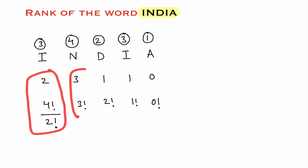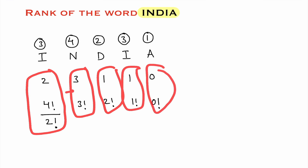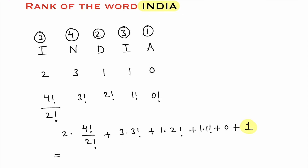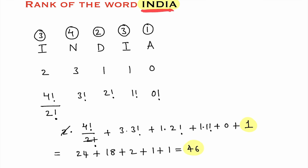Now multiply each pair and add them all: 2 × (4!/2!) + 3 × 3! + 1 × 2! + 1 × 1! + 0 × 0!. At the end, add plus 1. Calculating: 4! is 24, so 2 × 24/2 = 24, plus 3 × 6 = 18, plus 2, plus 1, plus 1. Adding all gives 46. Therefore, the rank of the word INDIA is 46.